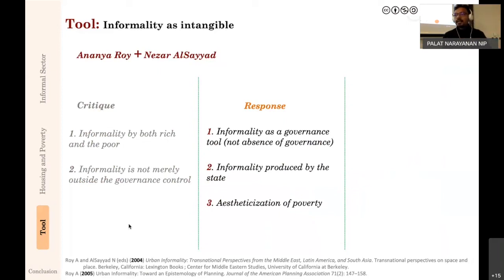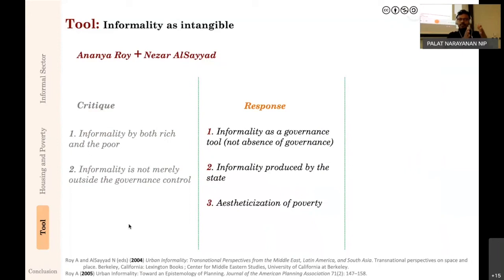Why is street vending informal? Because the state said you have to register businesses. In a city where you don't have to register, street vending informality does not exist—there is a state relationship there. This also applies to housing: if you look at borders between two countries, the morphology suddenly changes. On Google satellite maps you can see Italian and French border plots differ visibly. You don't need an international border sign to know it's a different country—because of the legal system, because of the state.